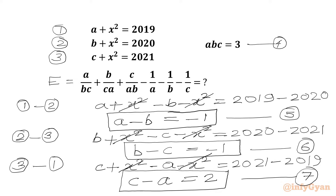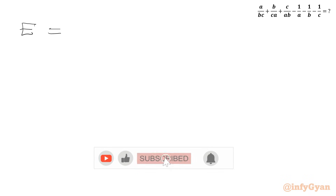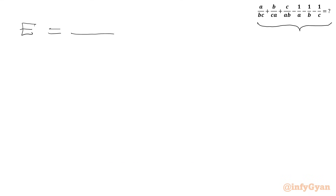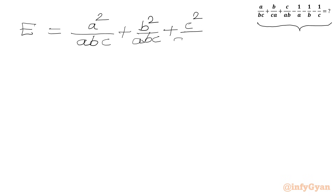Now we will find our expression — let us simplify a bit. We write E equal to a/(bc), which we can rewrite with abc in the denominator as a²/(abc). Similarly the second term is b²/(abc), the third term is c²/(abc). Then we have minus 1/a minus 1/b minus 1/c.